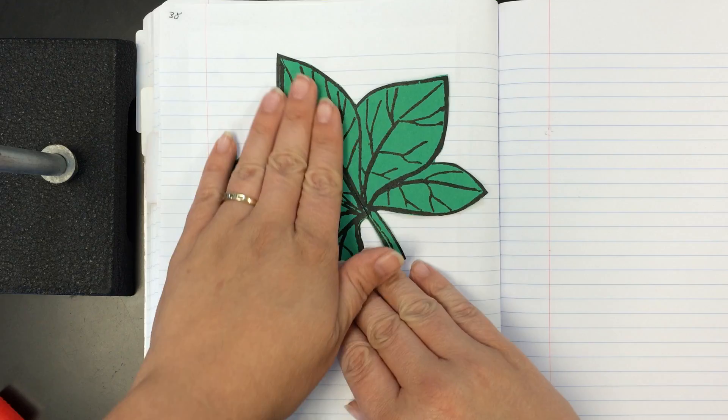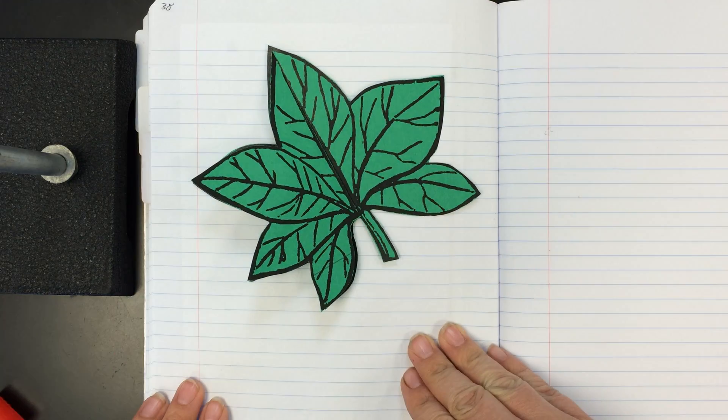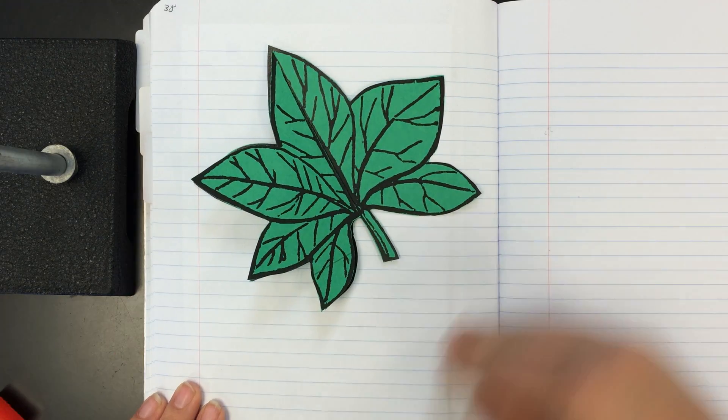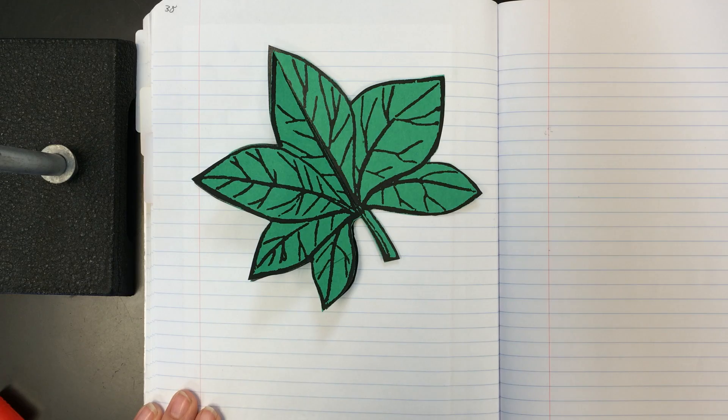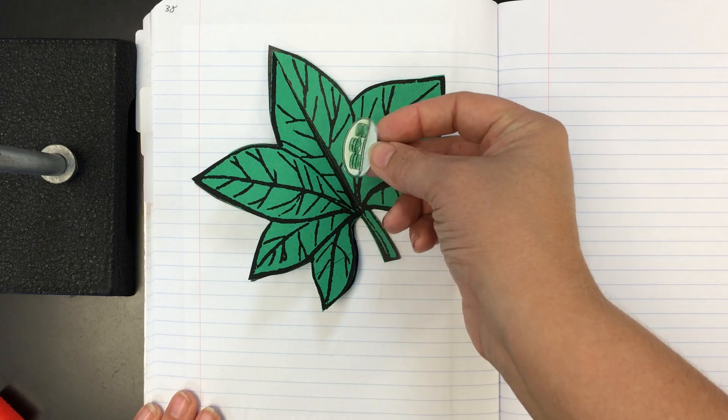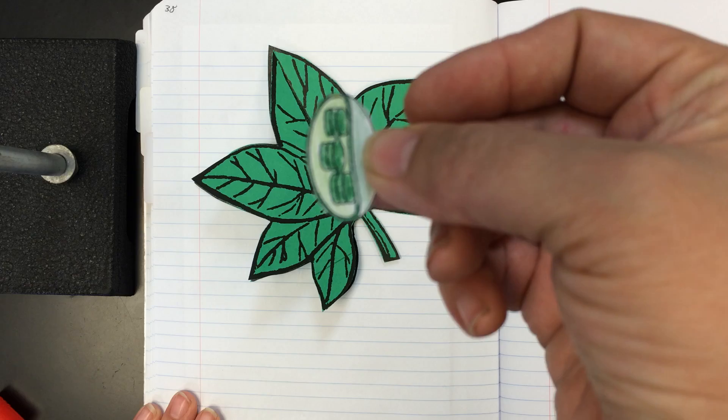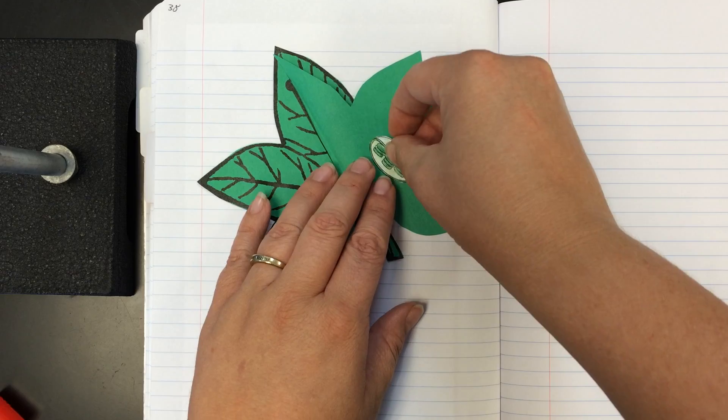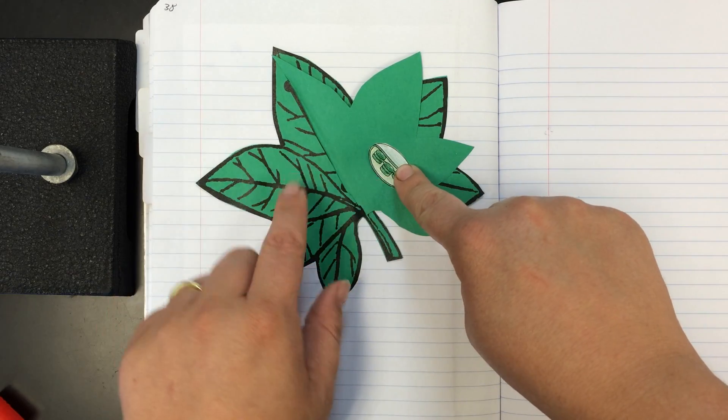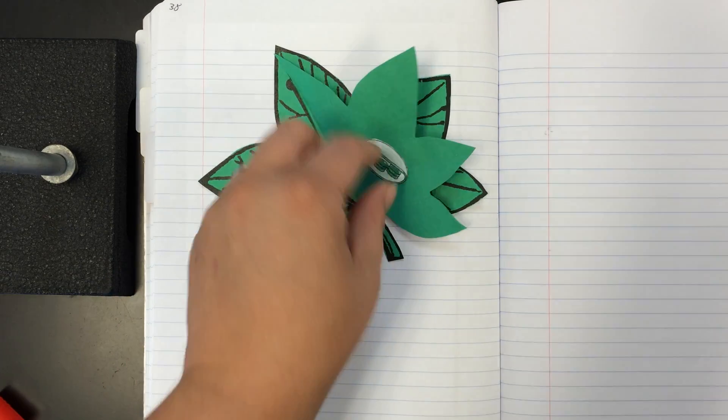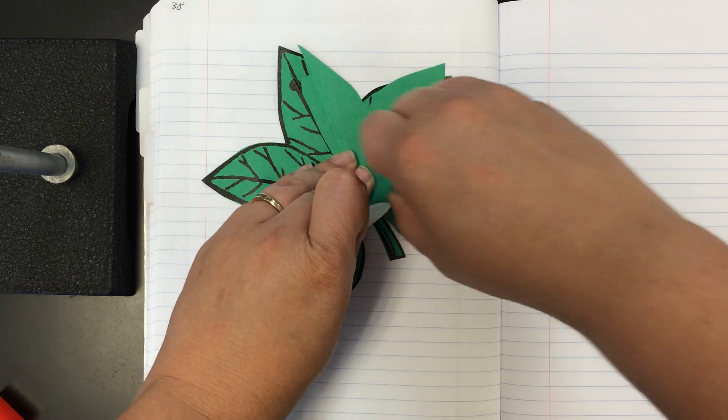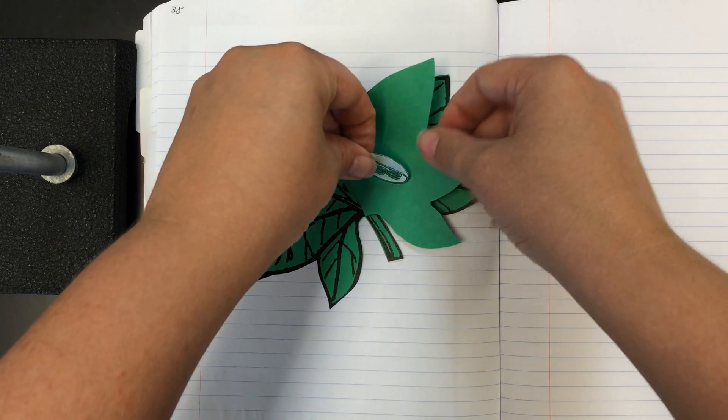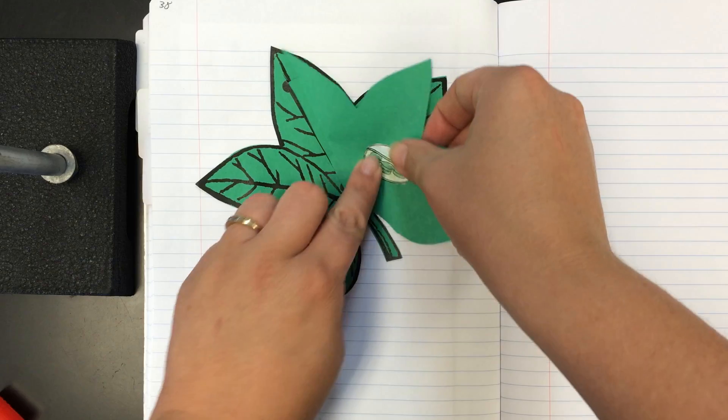So the next part is to go ahead and put a couple key pieces on. One is the chloroplast. And so the chloroplast is this cool little guy right here. We are going to put him on the underside of this leaf to show that chloroplasts are located in the middle of the leaf. So that way when we close the flap, the chloroplast will remain hidden from sight. So I'm going to put my chloroplast right here.